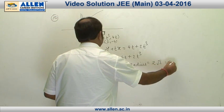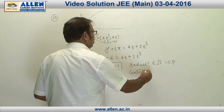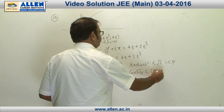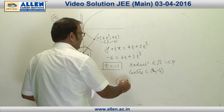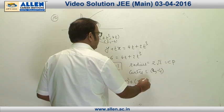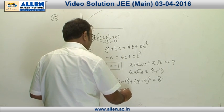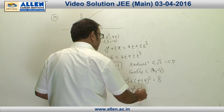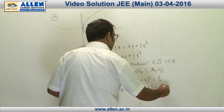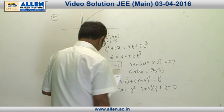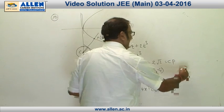The radius of the required circle is the distance CP = 2√2, and the center is P = (2, -4). The equation of the circle is (x - 2)² + (y + 4)² = 8, which simplifies to x² + y² - 4x + 8y + 12 = 0. Option 2 is the correct answer.